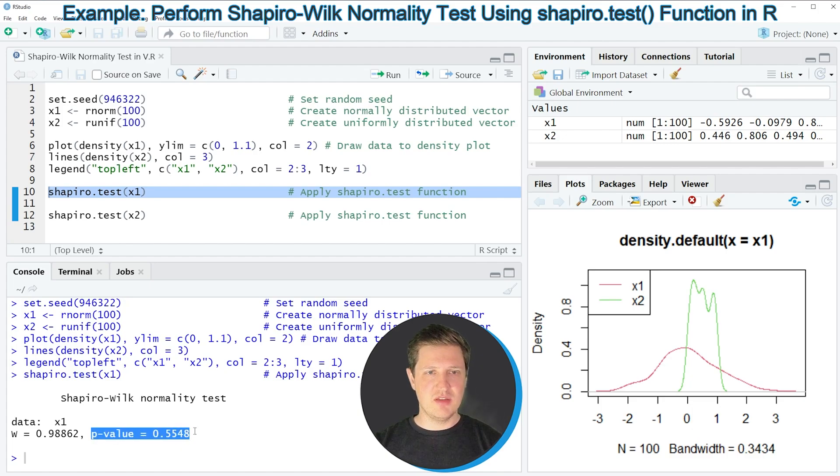As you can see, the p-value for the Shapiro test is larger than 0.05 in this case, and this indicates that our first vector object X1 is following a normal distribution.